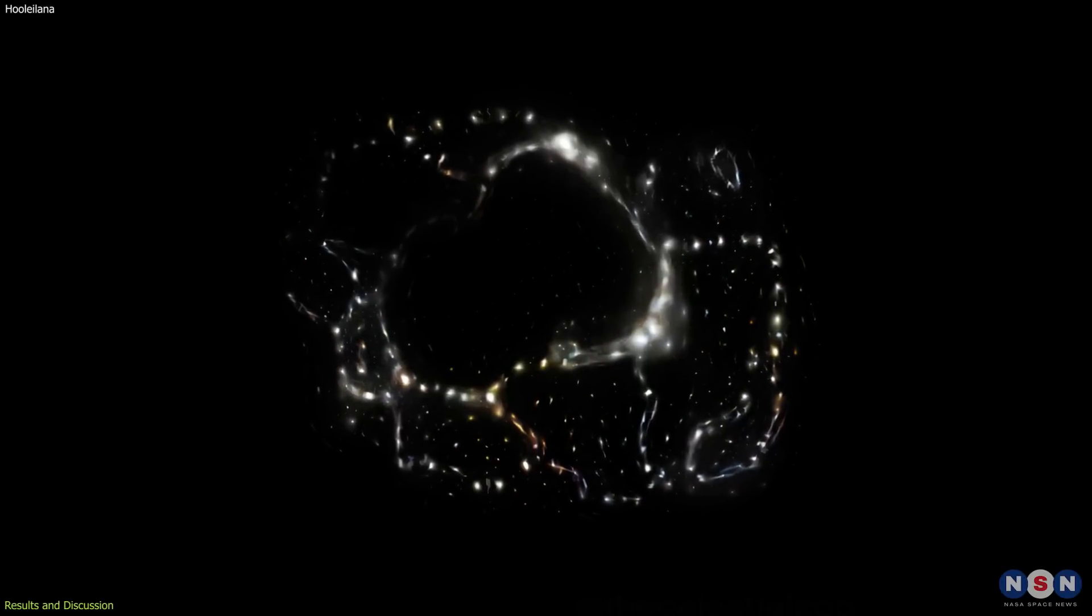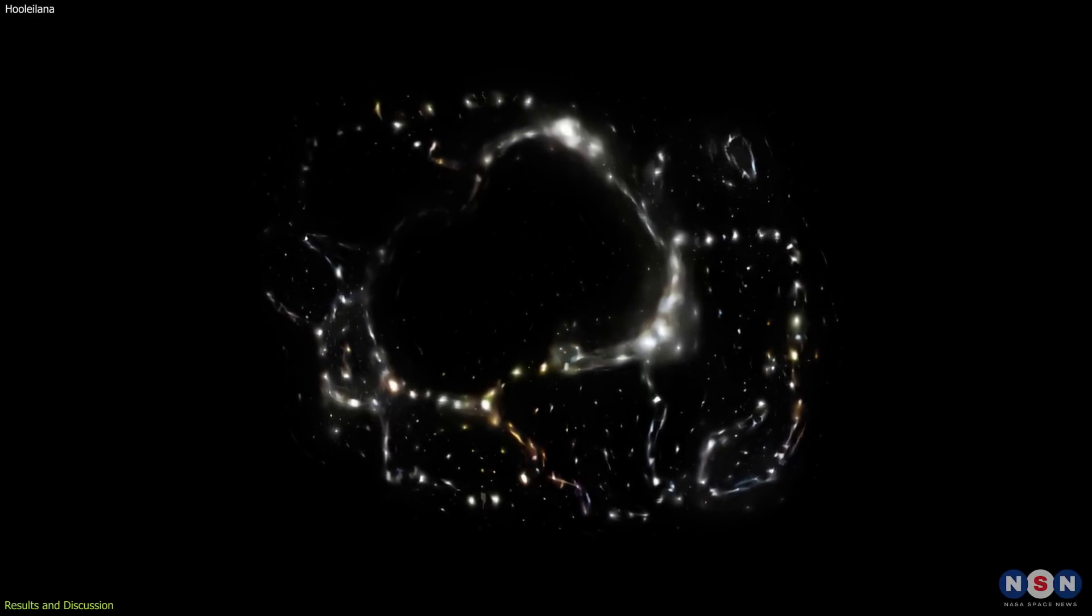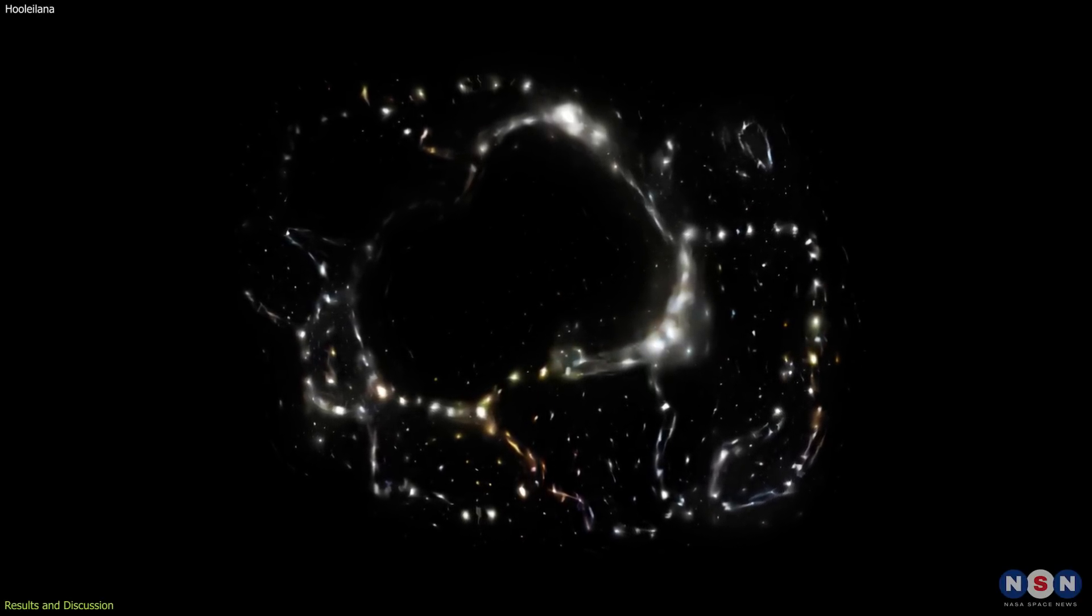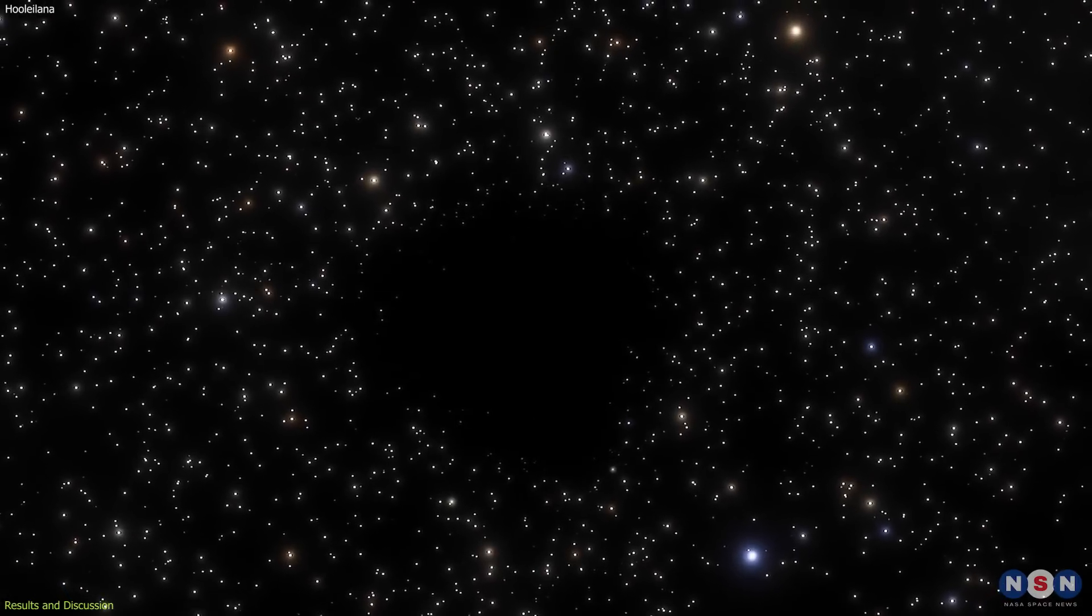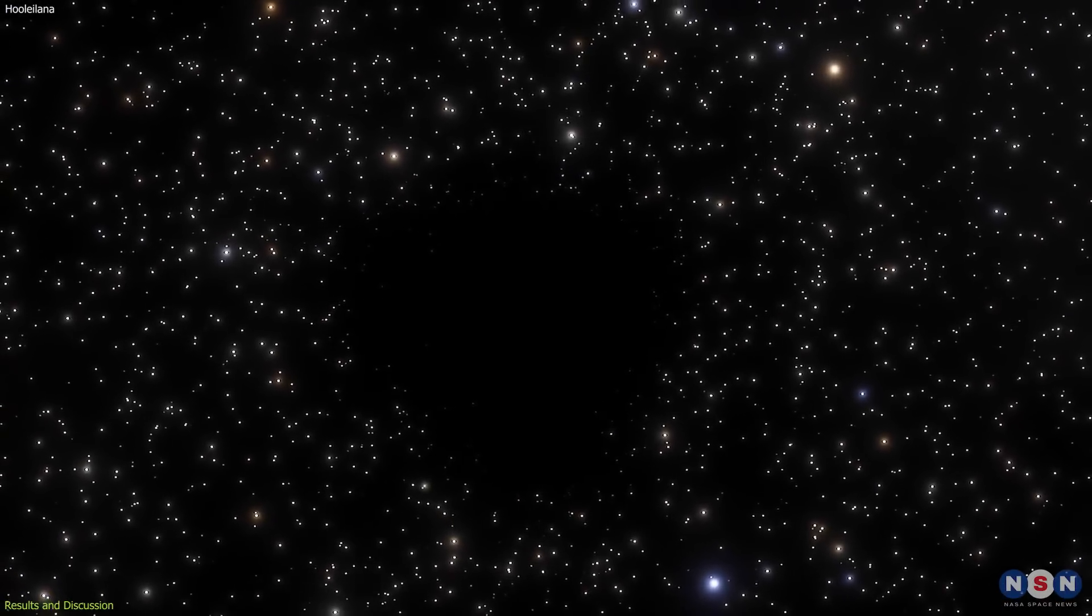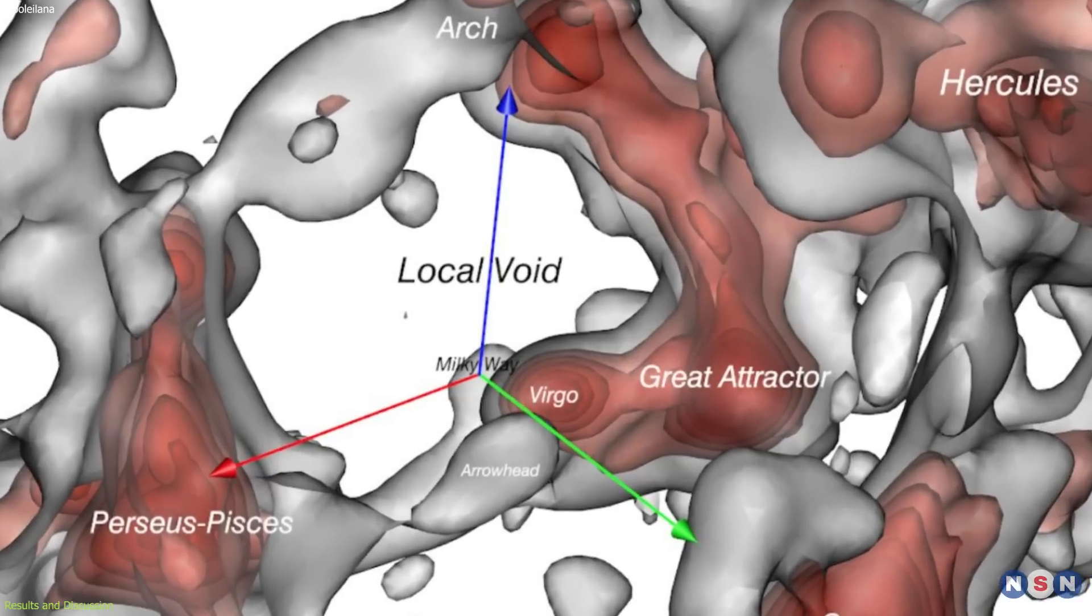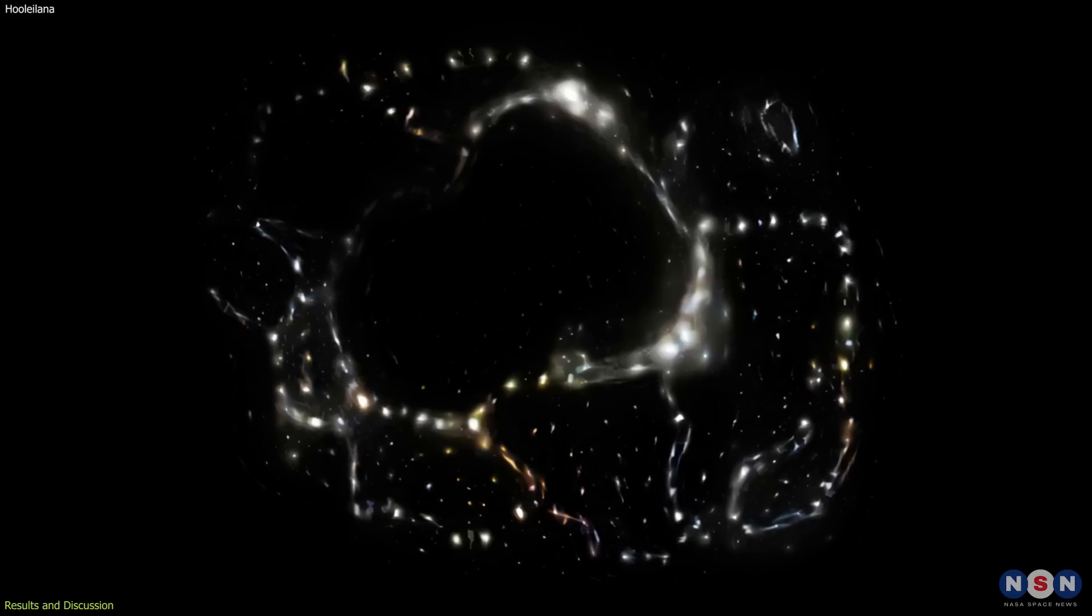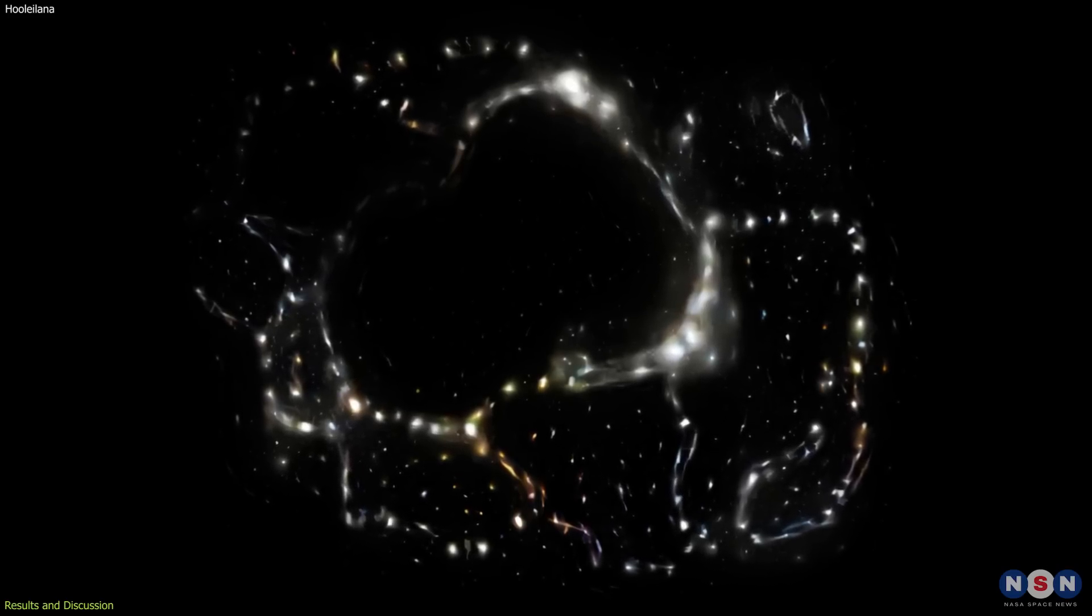However, the KBC void is a much larger region that encompasses the local void and extends beyond it. It has a diameter of about 2 billion light-years, and is located about 500 million light-years from us. Both of these bubbles are also shell-like structures, but they are more irregular and less spherical than Hulelana.